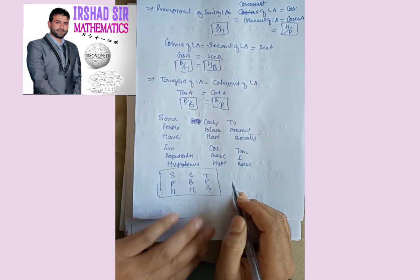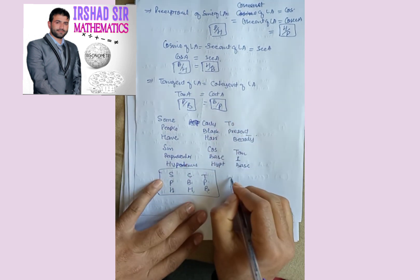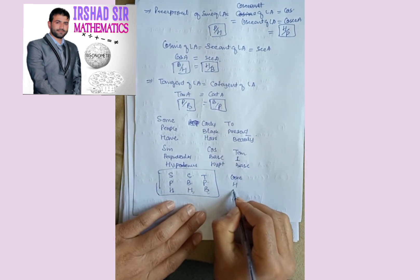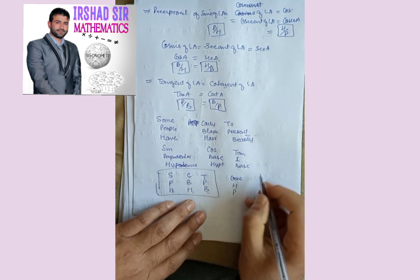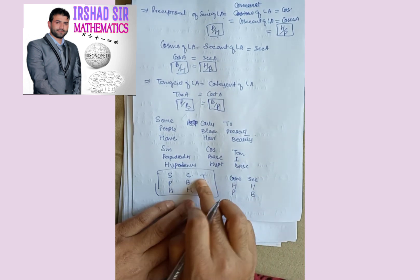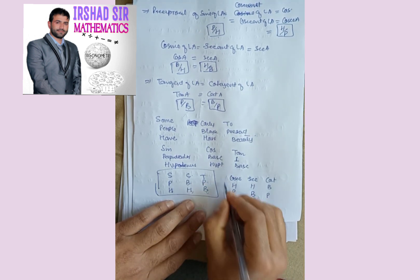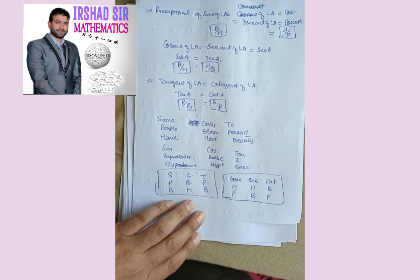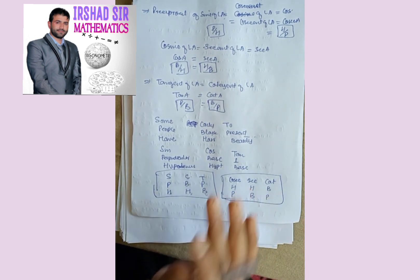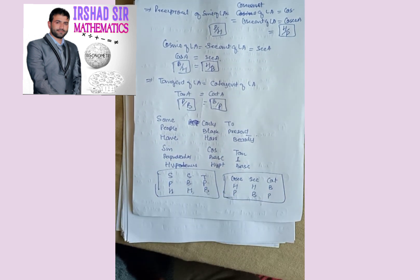The reciprocal of sin is cosec: if sin is perpendicular by hypotenuse, cosec is hypotenuse by perpendicular. The reciprocal of cos is sec: if cos is base by hypotenuse, sec is hypotenuse by base. The reciprocal of tan is cot: if tan is perpendicular by base, cot is base by perpendicular. Please subscribe and like my channel. Assalamu alaikum.